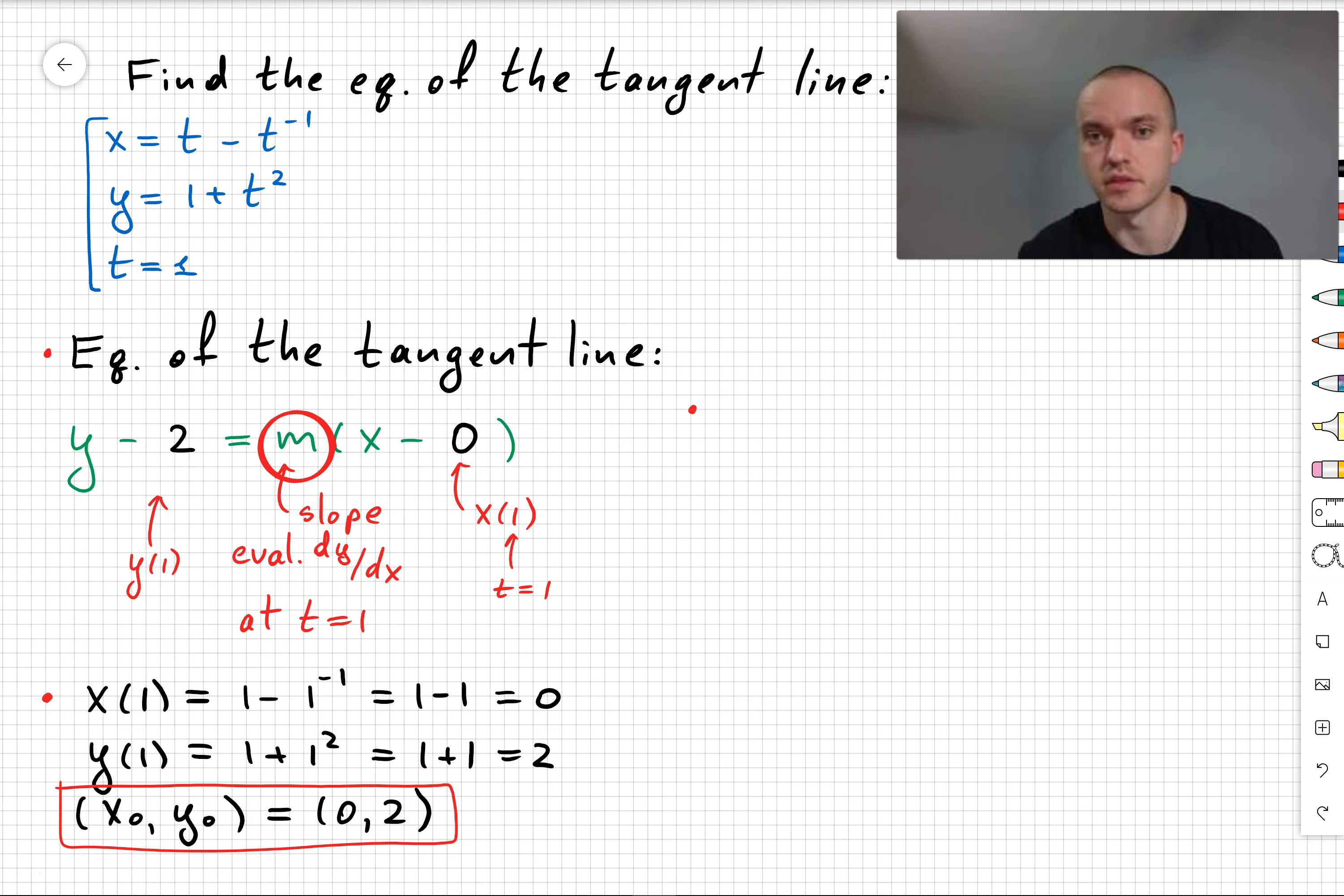To find the slope, I need to find the derivative first. We know that dy/dx equals dy/dt over dx/dt. So we need to find y'(t) and x'(t), where y'(t) means the derivative of y with respect to t.